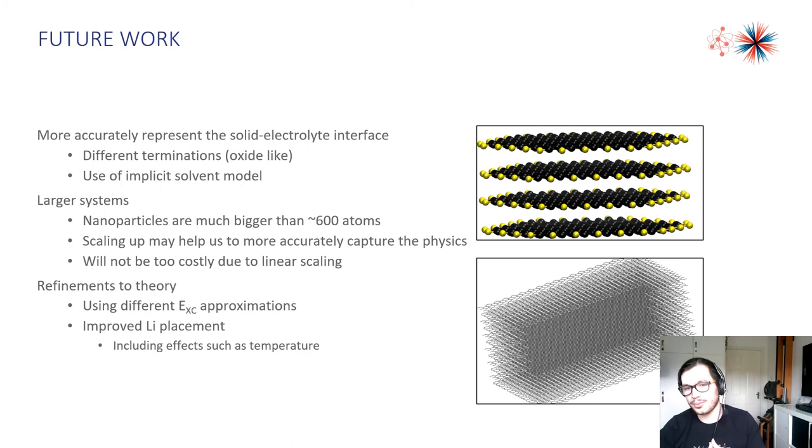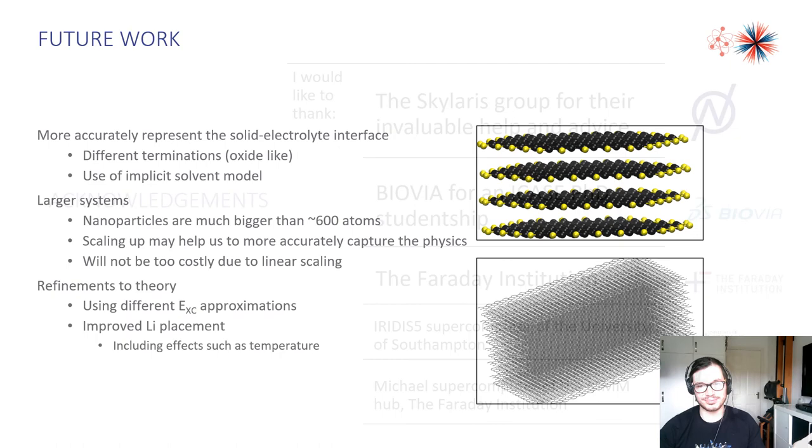We also want to move to larger systems. Nanoparticles are bigger than 600 atoms. This hopefully may help capture some of the physics we're maybe lacking in our smaller one and it shouldn't be too costly due to the linear scaling nature of ONETEP. We also want to look at refinements of the theory using different exchange correlation functionals and improving the lithium placement including effects such as temperature as you tend not to operate batteries at zero degrees Kelvin.